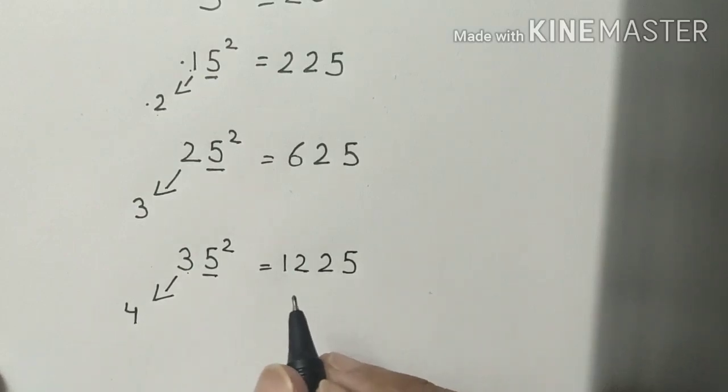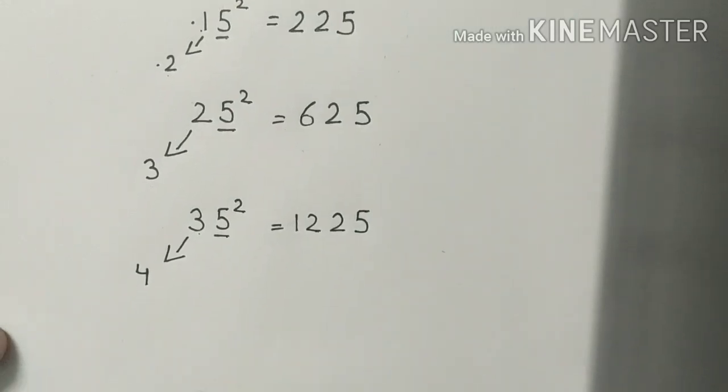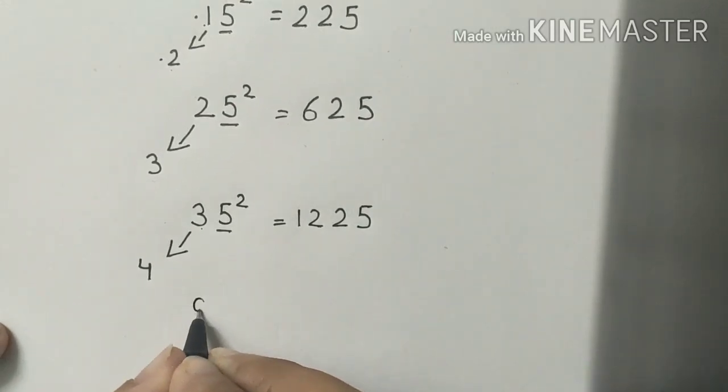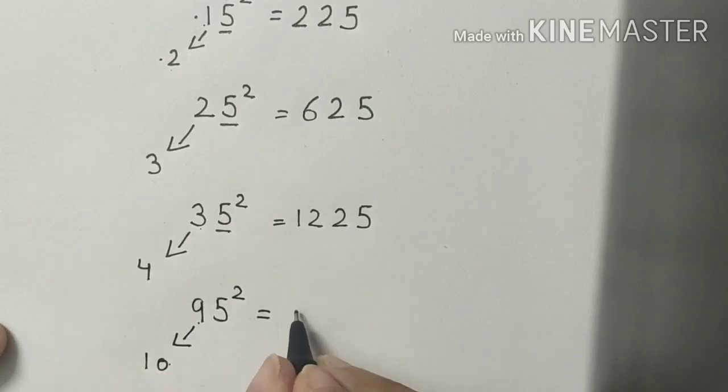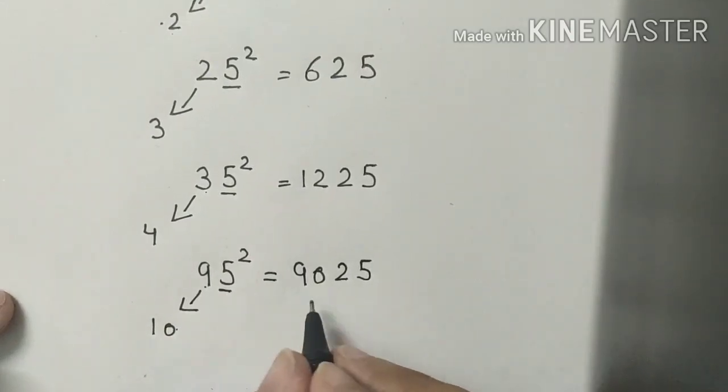Similarly, you can also calculate the squares of 45, 55, 65, 75, and 85. Now let's calculate the square of 95. What comes after 9? 10, and 10 × 9 is 90, and the square of 5 is 25. So the square of 95 is 9025.